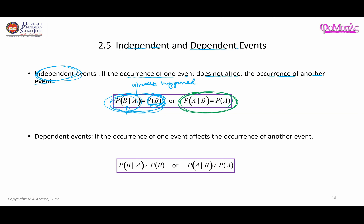Similarly, using the other notation: if B has already occurred, it is not going to change the probability for A. So the conditional probability of A given B is going to be equal to the probability of getting A itself.